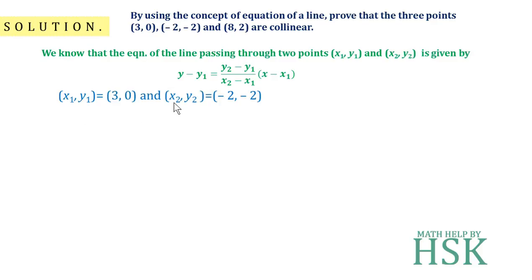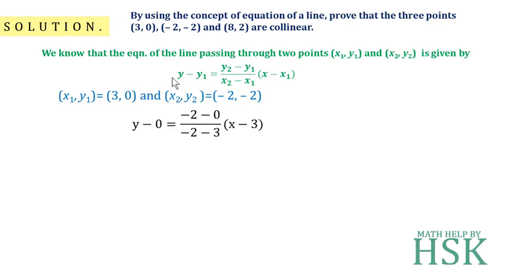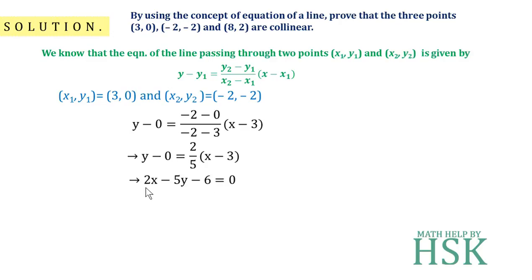Taking (x₁, y₁) = (3, 0) and (x₂, y₂) = (−2, −2), I get: y − 0 = (−2 − 0) / (−2 − 3) × (x − 3). On simplifying, y = (2/5)(x − 3). Multiplying through, this gives 2x − 6 = 5y, and rearranging: 2x − 5y − 6 = 0. This is the equation of the line, marked as equation number 1.